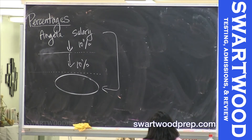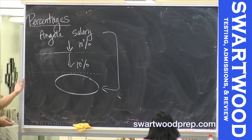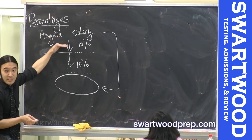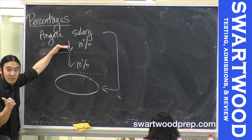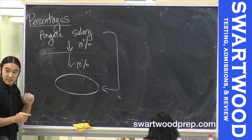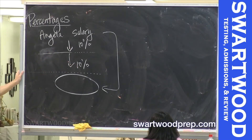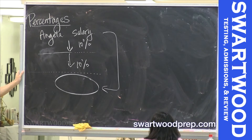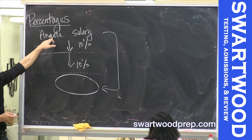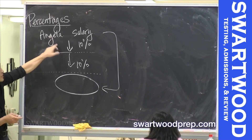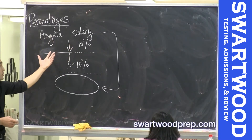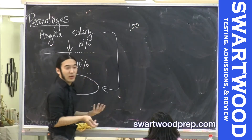It wouldn't be 20 — that's definitely a trap. The trap is it's not 20 because the second raise is a 10% increase off of not only your original salary, but your original salary including the bonus. So let's make it concrete.